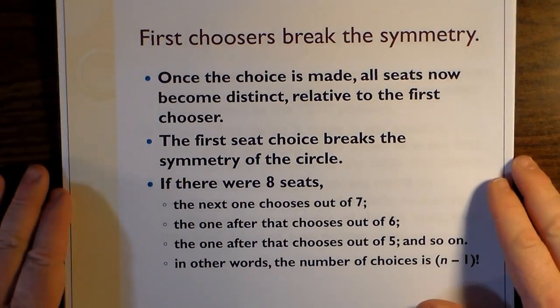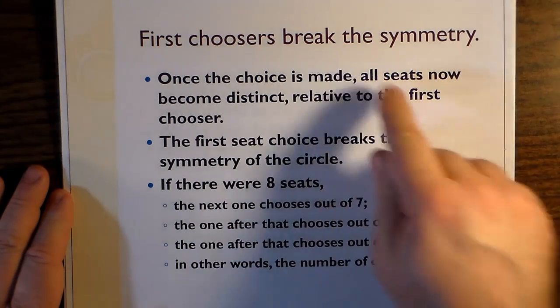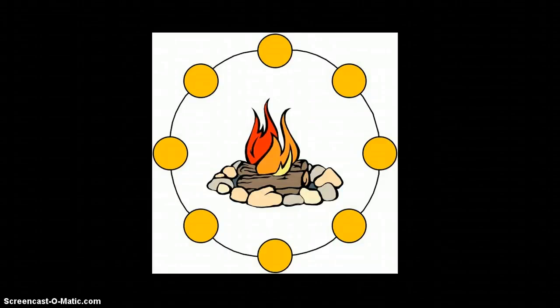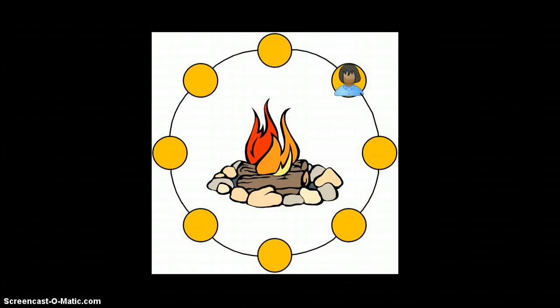So, the people who break the symmetry are the first choosers. Once the first choice is made, all seats now become distinct relative to the first chooser. The first seat choice breaks the symmetry of the circle.